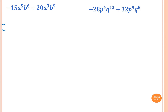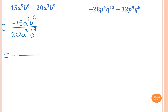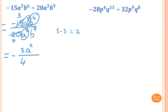Write in fractions: minus 15a⁵b⁶ over 20a³b⁹. A positive and a negative means the answer is negative straight away. 15 and 20 are both divisible by 5: divide to get 3 and 4. For a: 5 is larger, so 5 minus 3 is 2 — a² goes on top. For b: 9 is larger, so 9 minus 6 is 3 — b³ goes on the bottom. So the answer is negative 3a² over 4b³.